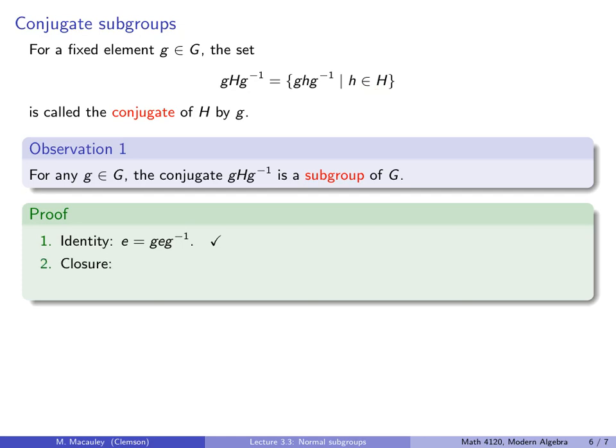Next, we have to show that this set is closed under the binary operation. In other words, if we multiply two elements of this form together, we get another element of that form. And here's why that's true. Notice if you multiply two elements in this set, these two, well the g and the g inverse will cancel, leaving us with this element, which of course is in this set, because h1 h2 is in H.